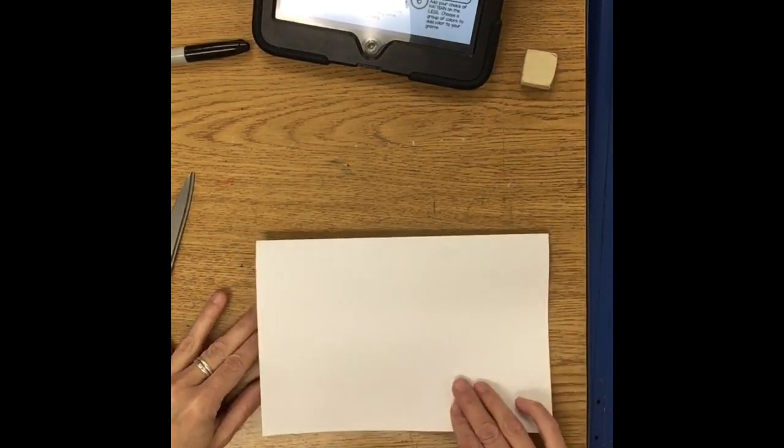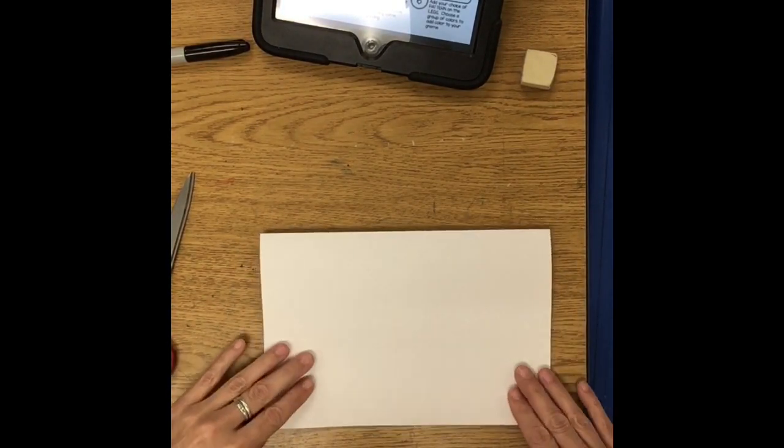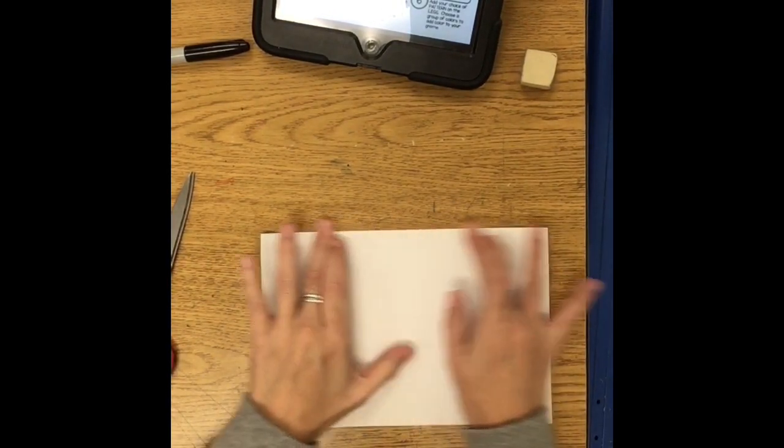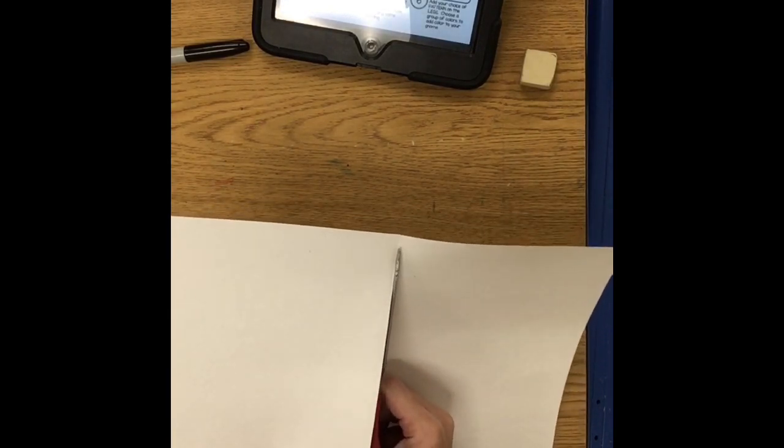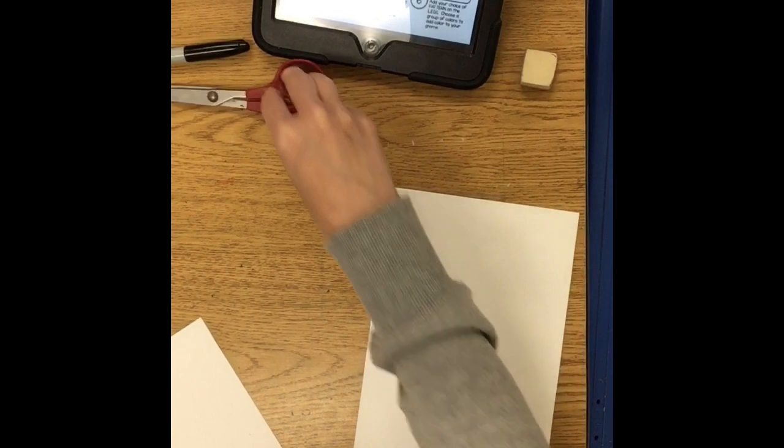So what you're gonna do is you're going to take your paper and just fold it in half. So I'm just matching up the short sides. Creasing it good and then I'm gonna cut it in half using my scissors and then we'll tape it back together. So we have one long thin sheet so our gnomes are going to be standing sort of side by side.